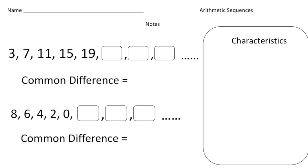Hey everybody, Dr. Nelson here. This is a video about something called arithmetic sequences. During this unit of study, you're going to learn there are different types of sequences, and this is the first major type. So what exactly is an arithmetic sequence? Take a look at these numbers: 3, 7, 11, 15, and 19. Do you see the pattern? Can you predict what the next number is going to be?